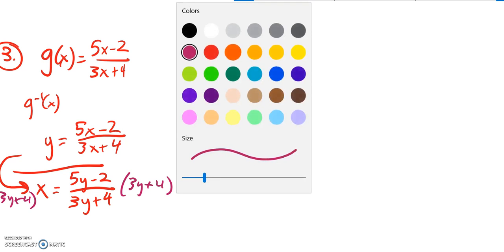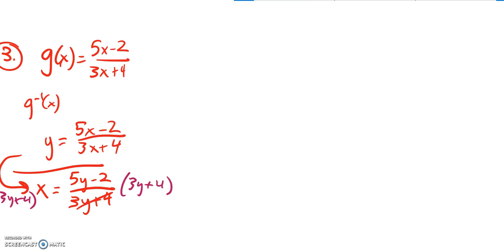So, got that. And then on this side, that divides out. On the left-hand side, I can distribute that x into there. So this becomes 3xy, 3 times xy, plus 4x. And that's equal to just what's left over here, that numerator, 5y minus 2.